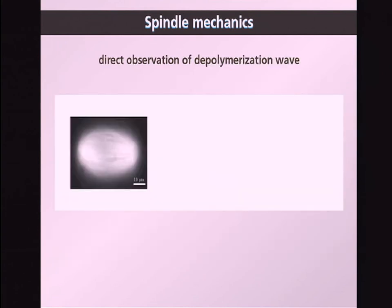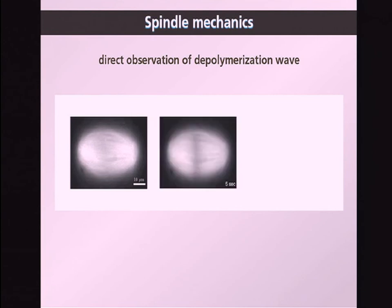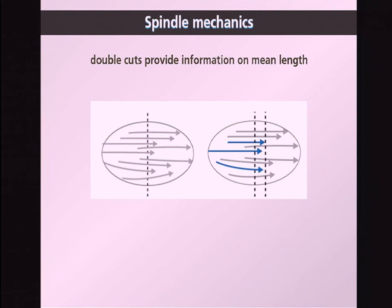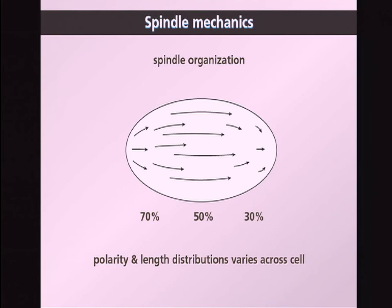Here you see one of these spindles floating in solution immediately after a planar cut, which launches a depolymerization wave towards the pole of the spindle. We can create two cuts to obtain information on mean lengths, and in this way determine the spindle organization. We found that both the polarity distribution and the length distribution vary across the cell — the microtubules in the center are the longest, while those towards the edge are much shorter. Near the left spindle pole, 70% of the microtubules are pointing towards the right, with the complementary 30% on the right side. Full details on Monday in an invited paper.